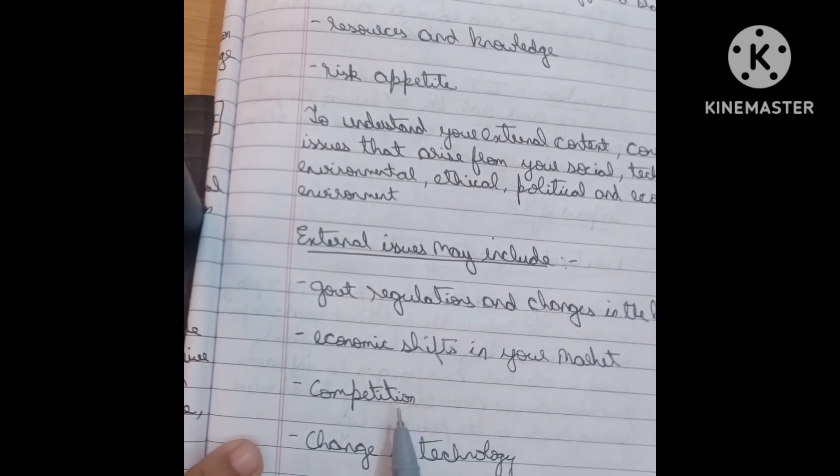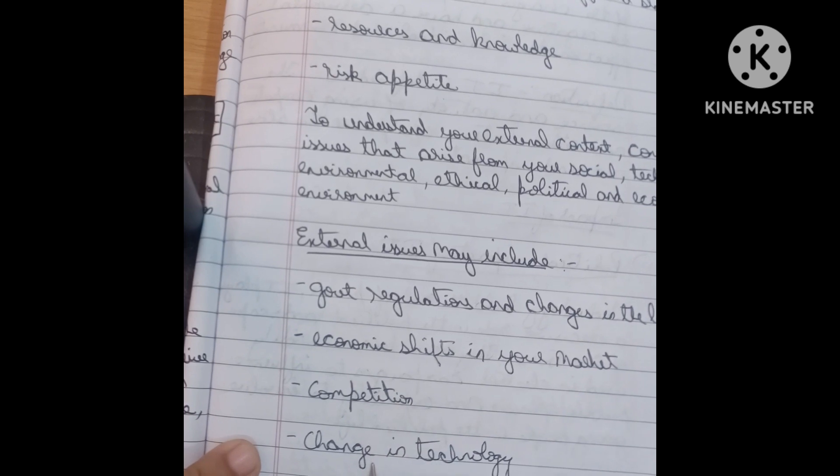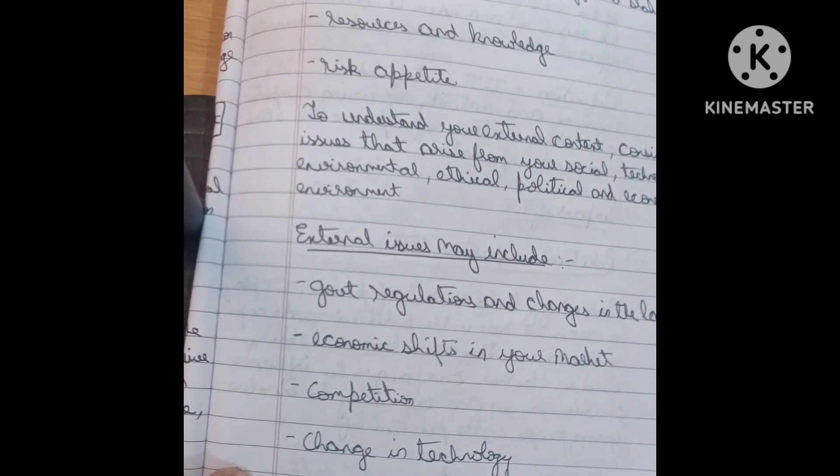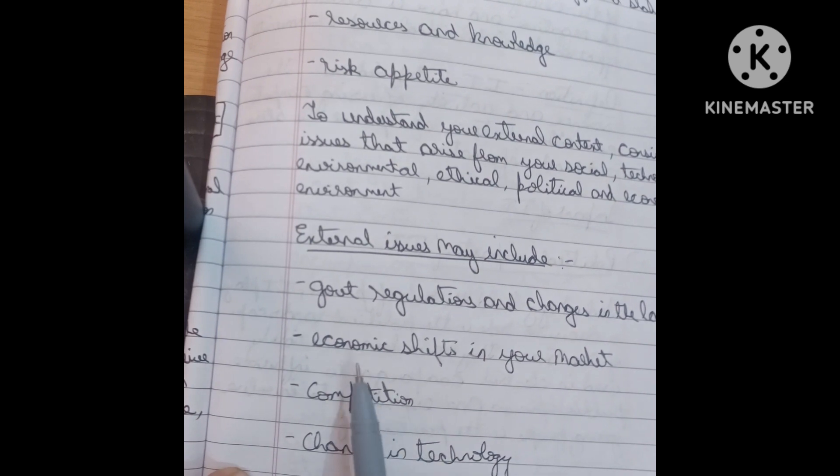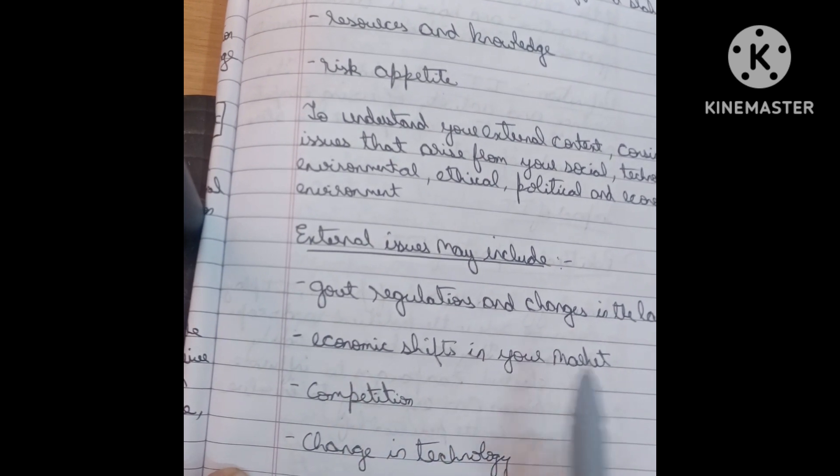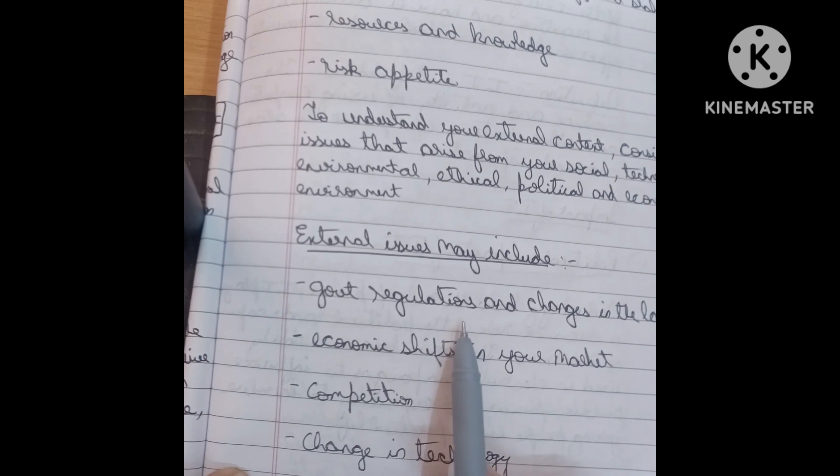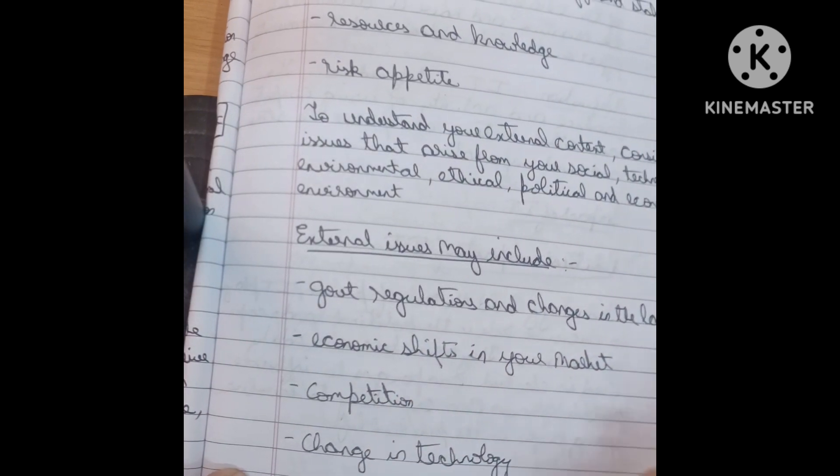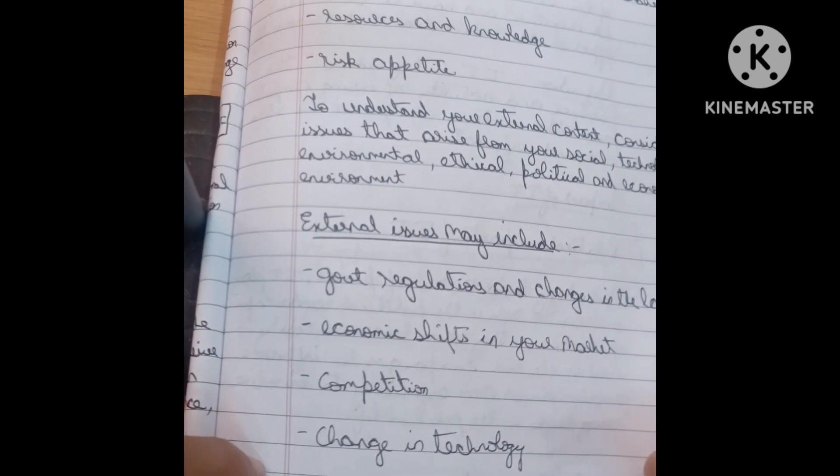What is your external issues means competition very important. Then change in technology whenever the new technology is coming in the market, how to adopt the technology, economic shifts in your market and regulations and changes in the laws. Whenever any law is changed, any rule is changed, how to implement immediately for your organization.